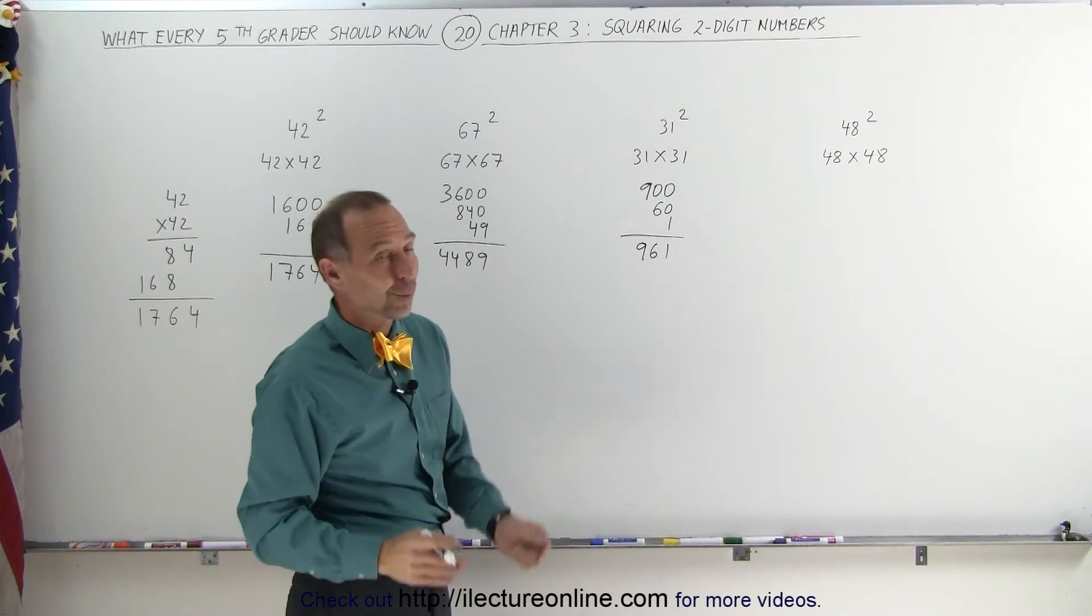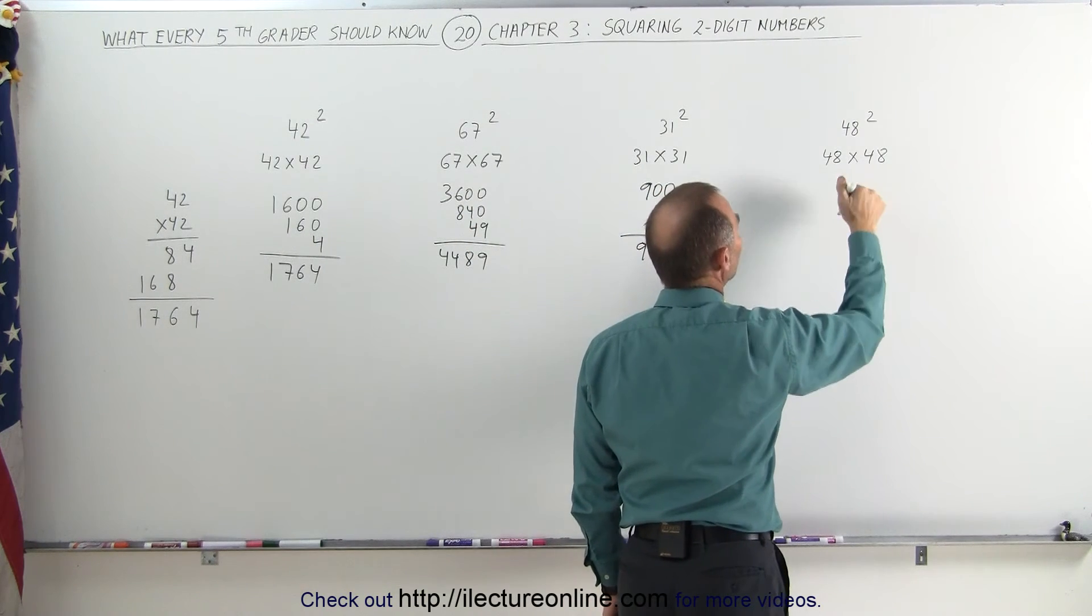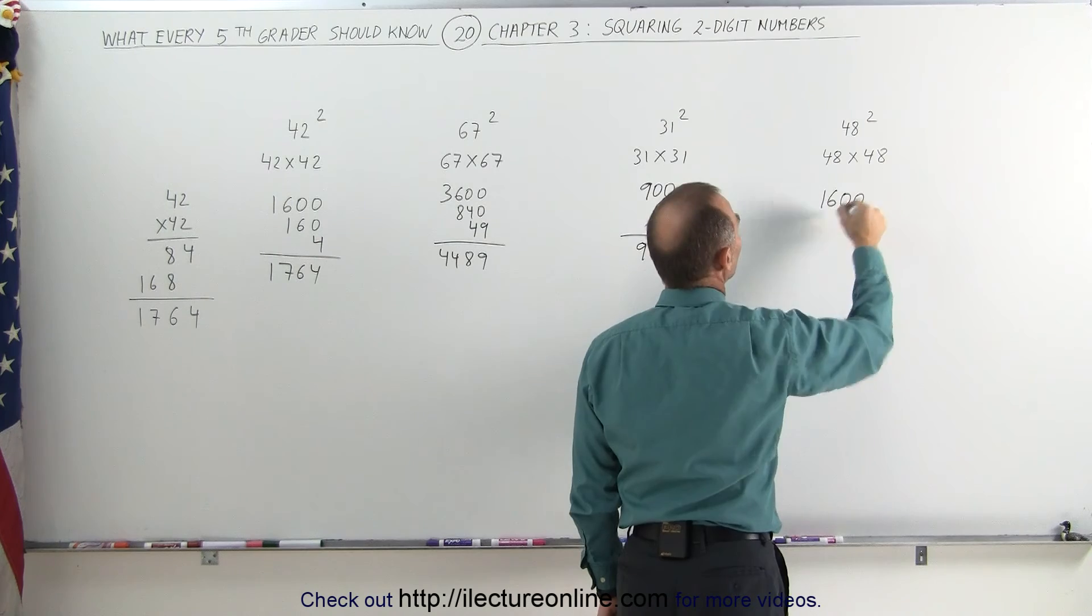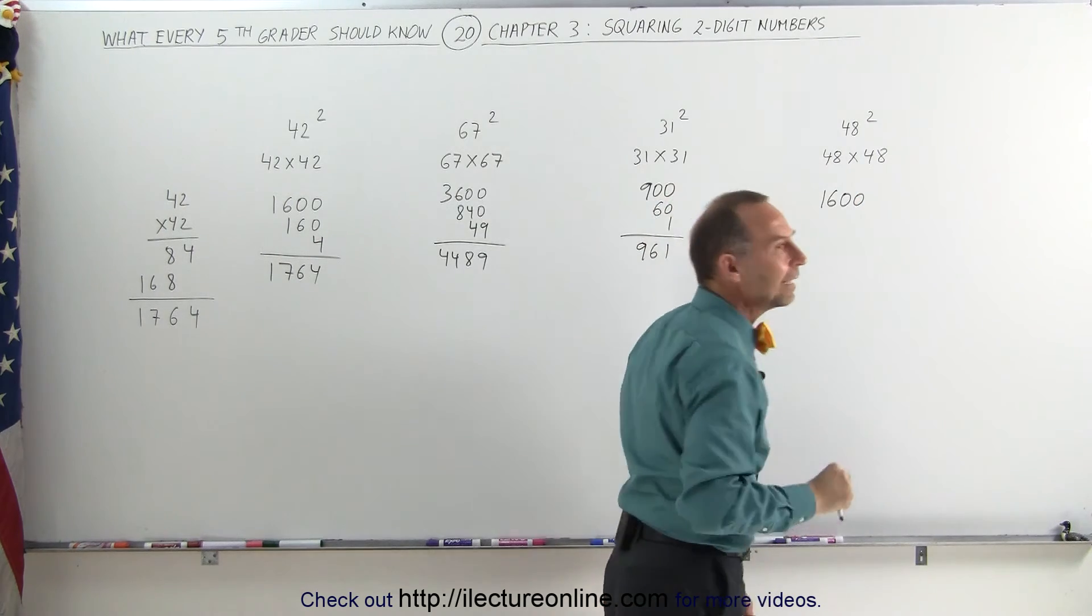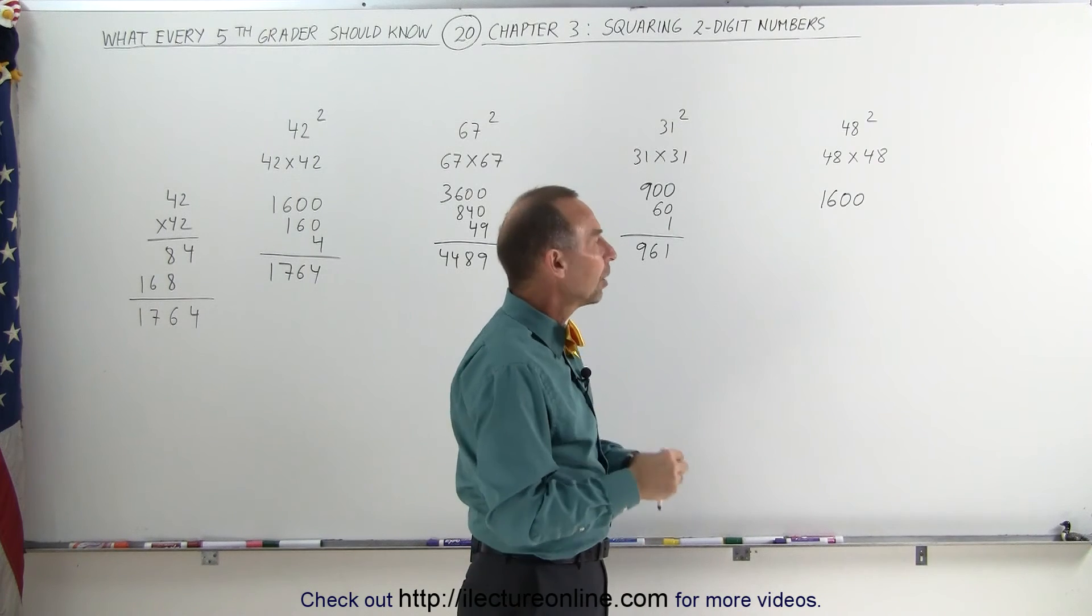When the numbers are smaller, it's of course easier. How about 48 squared? Again, 4 times 4 is 16, add two zeros, so you get 1600. 4 times 8 is 32, add a zero, that's 320. Double 320, you double each number, that's 640.